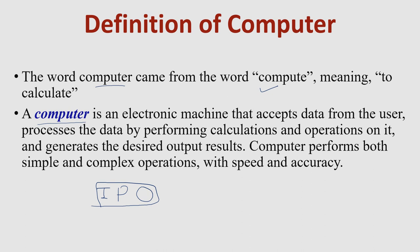Computer can perform both simple and complex operations with speed and accuracy. It can perform a simple operation like adding two numbers, and complex operations like video editing, graphics designing, or analyzing a large amount of data — all with speed and accuracy.